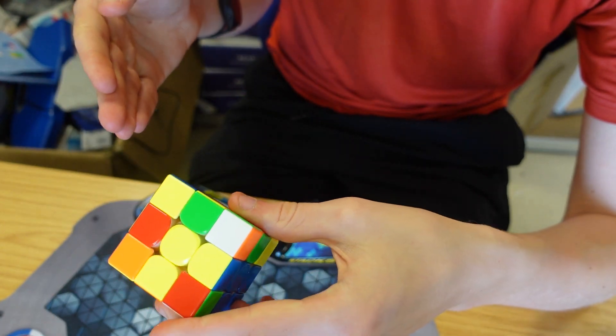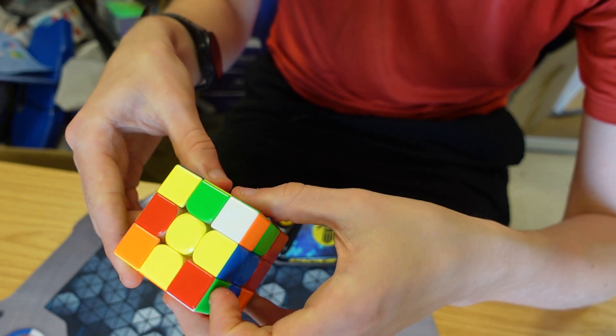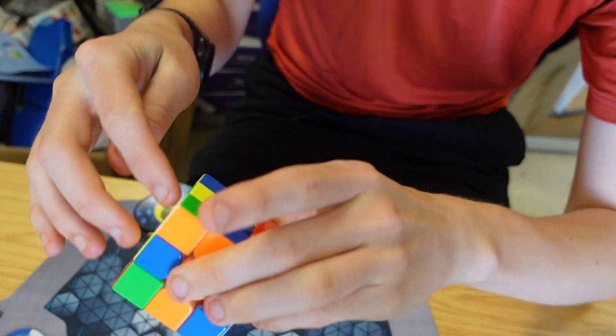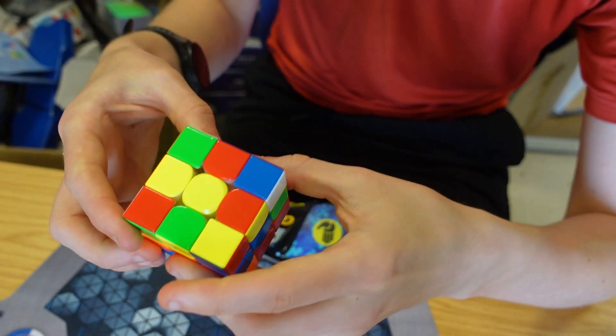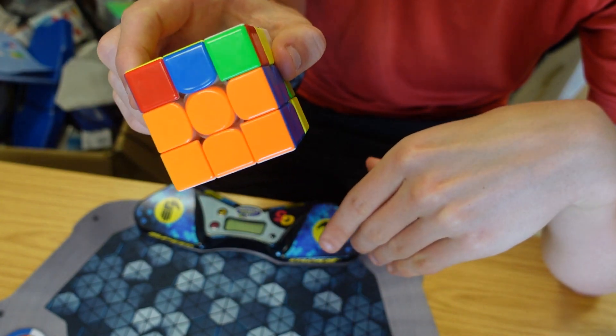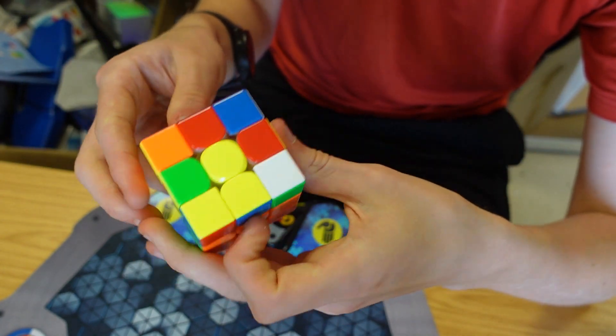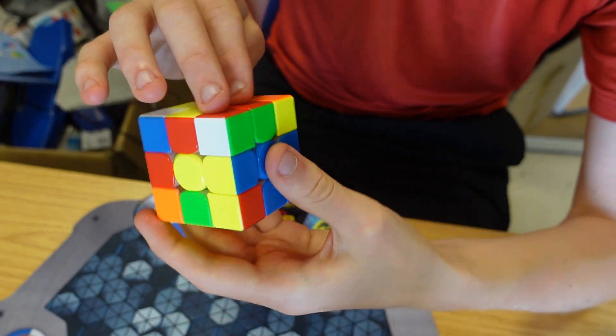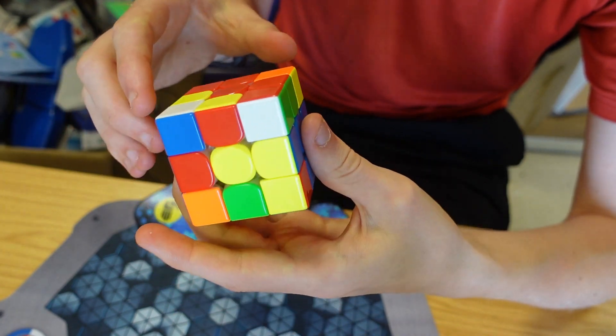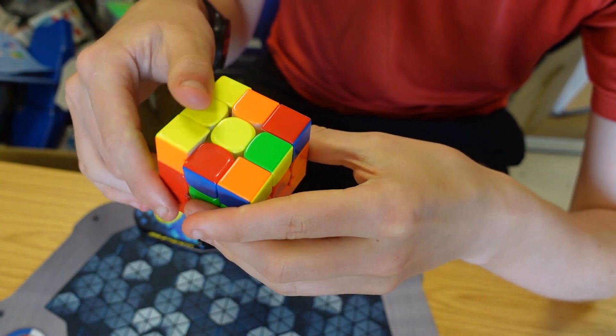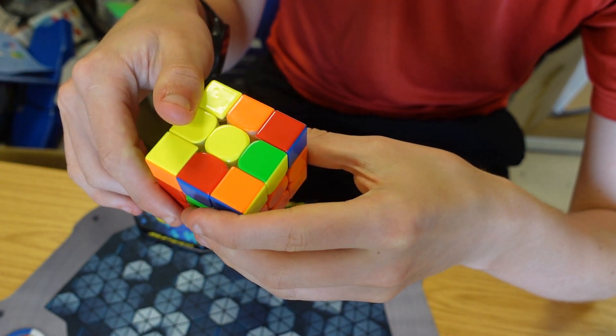It's pretty obvious he's already planned way ahead because he goes straight into doing D prime U and then inserts this corner which is currently in the back into that slot here to pair up a double X-cross. He then rotates the cube and solves this pair into the back like that, but he goes straight in with an R move there.